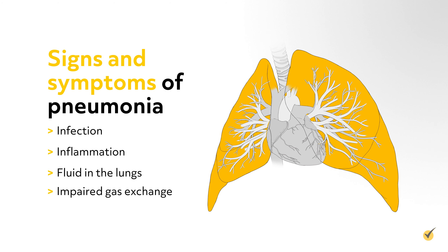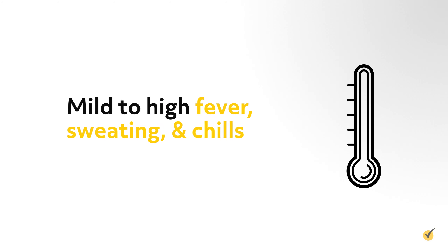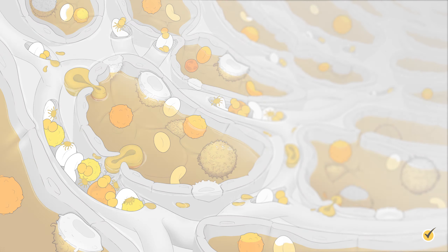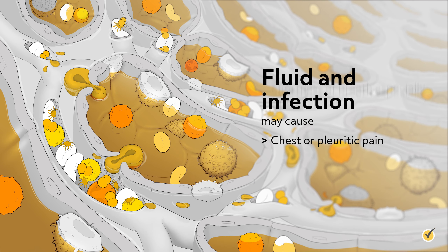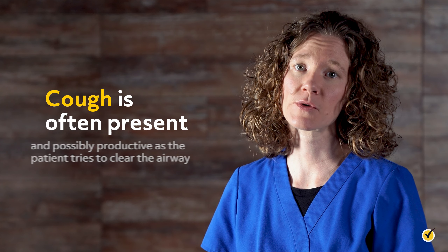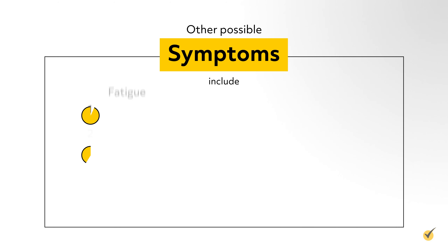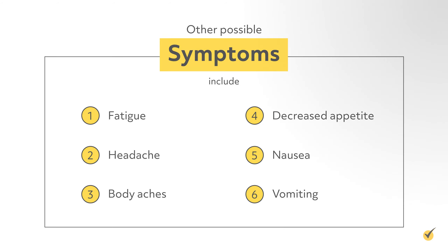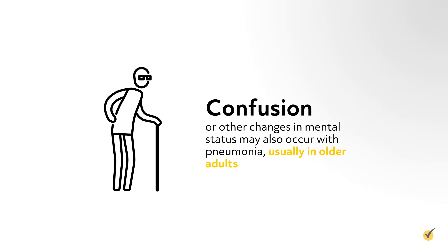Infection, inflammation, fluid in the lungs, and impaired gas exchange are responsible for most of the signs and symptoms of pneumonia. Mild to high fever, sweating, and chills may be present as the body tries to fight infection. Fluid and infection may cause chest or pleuritic pain and shortness of breath, especially with exertion. Cough is often present and possibly productive as the patient tries to clear the airway. Other possible symptoms include fatigue, headache, body aches, decreased appetite, nausea, and vomiting. Confusion or other changes in mental status may also occur, usually in older adults.